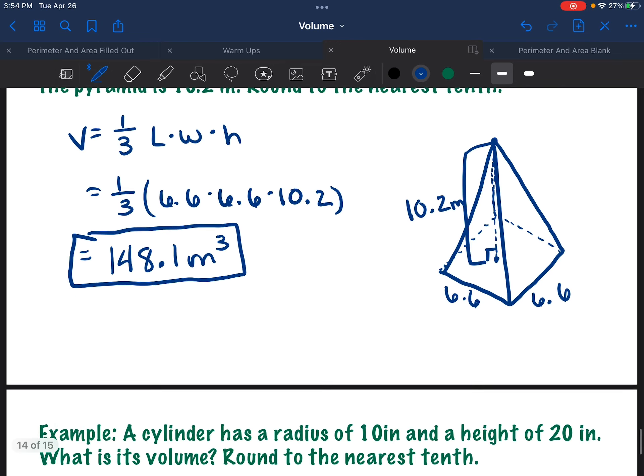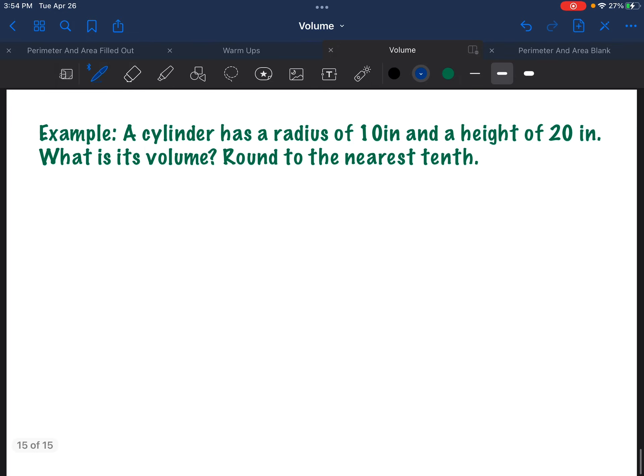Let's do another quick example. So let's say we have a cylinder who has a radius of 10 inches and a height of 20 inches. We want to know the volume. So if I draw my cylinder, I've got a circle here, a circle down here. It's connected. There's my cylinder. It has a radius of 10 inches, so it goes from the center to the edge. That's 10. And my height is 20.